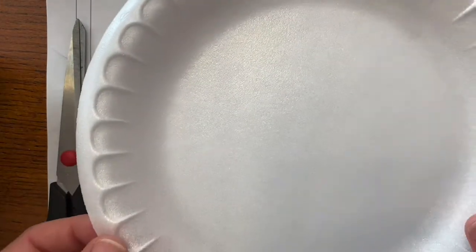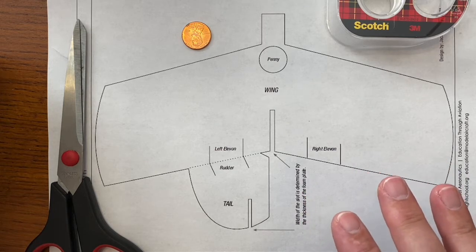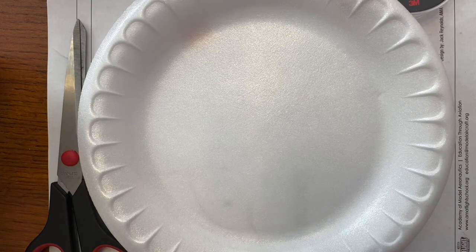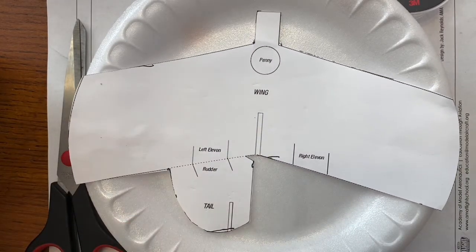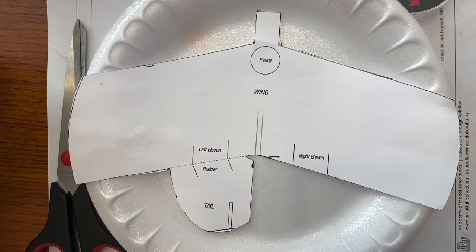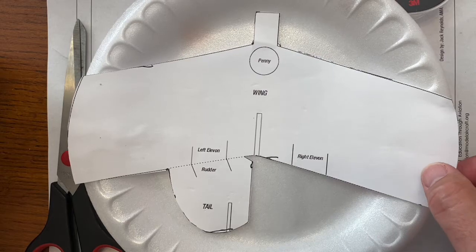So you get your foam plate, get all your other materials ready, and you set about cutting out the template. Once the template is cut out, you trace the template over the top of the foam plate with a Sharpie pen. Works fairly well. And then you cut out the outline on the foam plate itself.